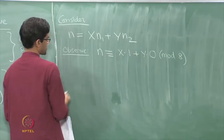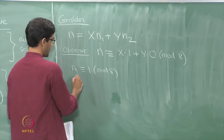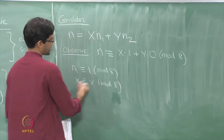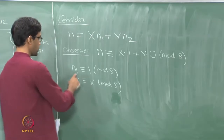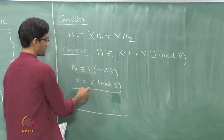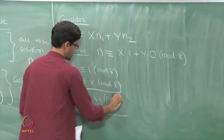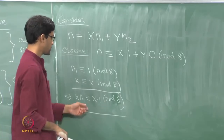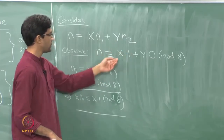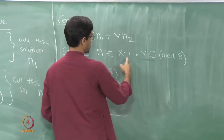Let me sketch a proof. n1 is known to be congruent to 1 mod 8, and x is congruent to x mod 8 — a trivial statement, just saying x and x leave the same remainder when divided by 8. Using the multiplication property of congruences, x·n1 is congruent to x times 1 mod 8. Similarly, y·n2 is congruent to y times 0 mod 8, which is just x — since x·1 plus y·0 equals x.